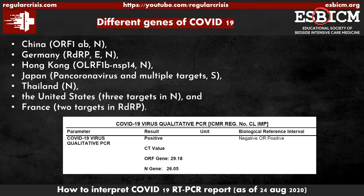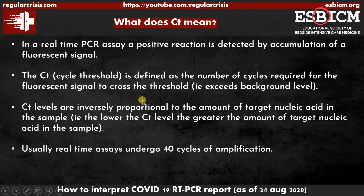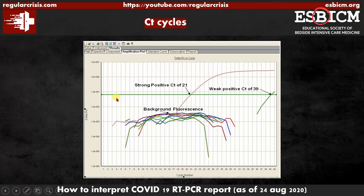Now we will see what this CT value is and what these numbers mean. CT stands for cycle threshold. In RT-PCR, they reverse transcribe RNA into DNA and then amplify the DNA particles. Whenever they amplify, it is detected by accumulation of a fluorescent signal. When this fluorescent signal crosses a particular threshold level, the test is considered positive; if it does not cross the threshold, the test is considered negative. The DNA samples are amplified cycle by cycle — up to 40 cycles — and if it crosses the threshold at, say, 21 cycles, those are the cycles required.